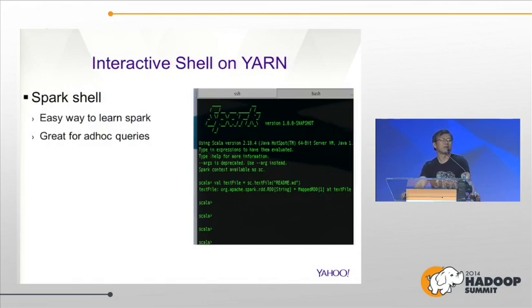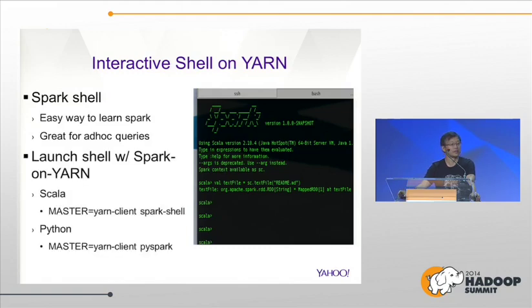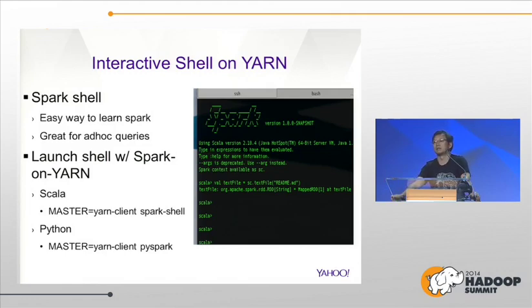One example of the client mode is the Spark interactive shell, a tool that Spark users and developers use to learn Spark or to explore their data. With Spark on YARN and client mode, we enable the Spark shell for you. To launch it, you simply specify the master as 'yarn-client,' and once you launch it, whatever RDD transformations you type will happen on the machines in your Hadoop cluster.